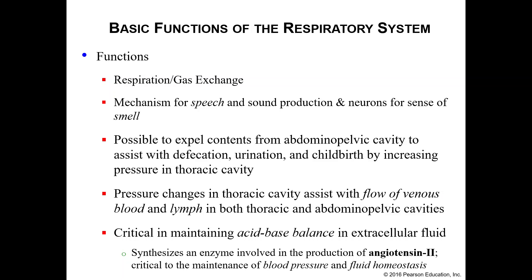And then we have the acid-base balance of extracellular fluid. This one is going to come up a lot — acid-base balance is really a big deal, so keep that one in the back of your mind. Anytime you see anything about acid-base balance, put a star by it, highlight it, circle it. Your respiratory system also assists with the synthesis of enzymes involved in the production of angiotensin 2, which we've repeatedly mentioned in previous discussions on the maintenance of blood pressure. It will also help with the regulation of fluid homeostasis, so angiotensin 2 will come up a couple more times.